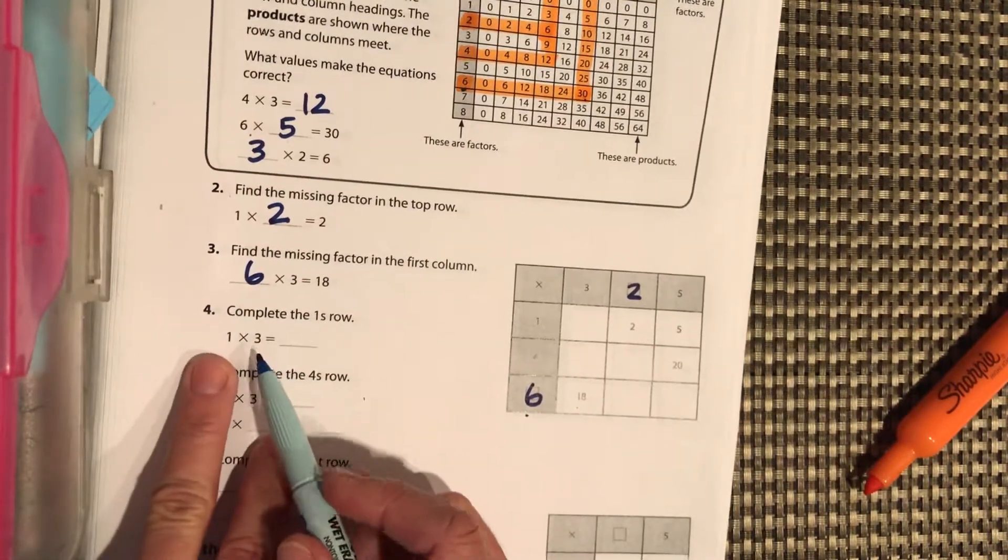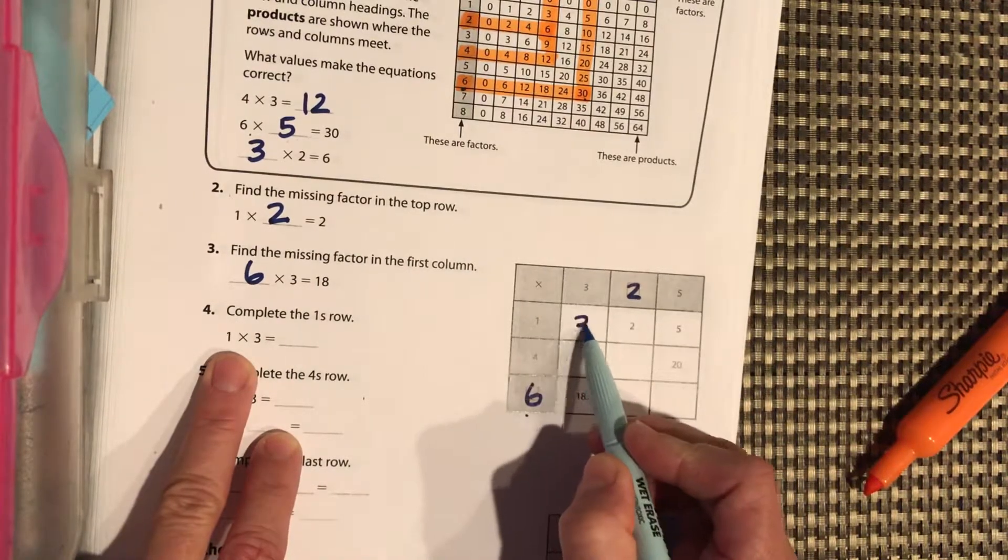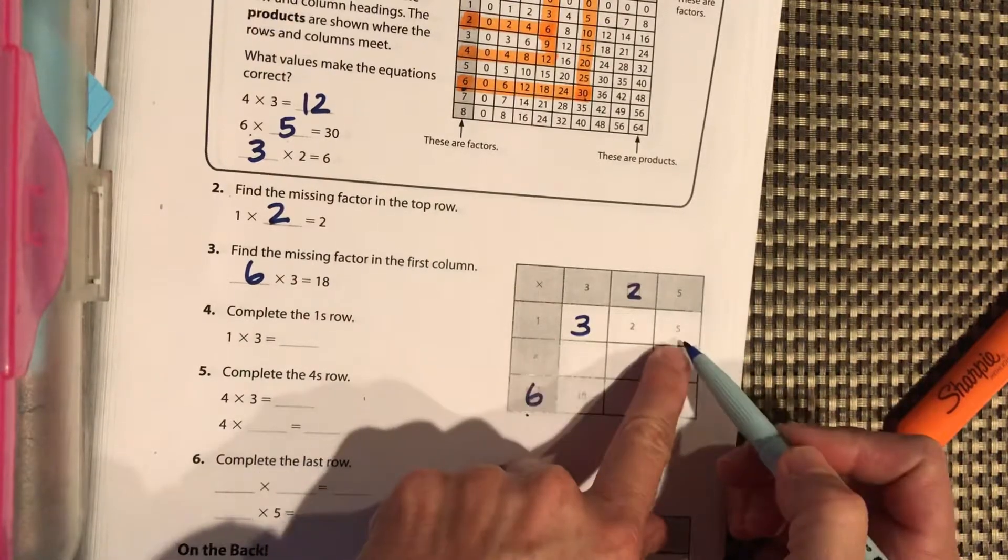Okay, complete the 1's row. So 1 times 3 equals 3, and then let's just check, 1 times 2 equals 2, and 1 times 5 equals 5.